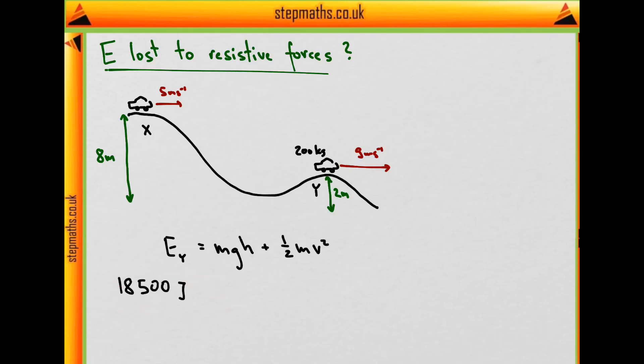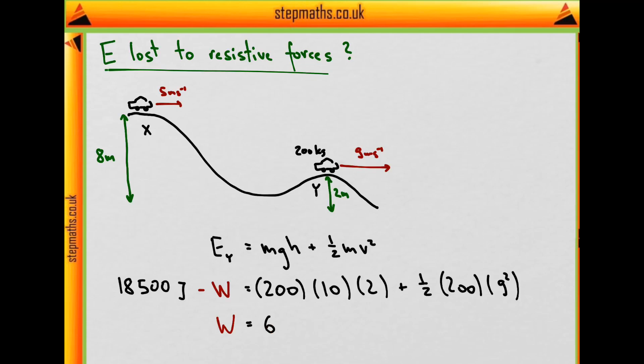This is what it looks like with all the numbers plugged in. That gives us that the work done by the resistive forces, or the energy lost to resistive forces, is 6,400 joules, which is the correct answer. In the exam, it was option B.